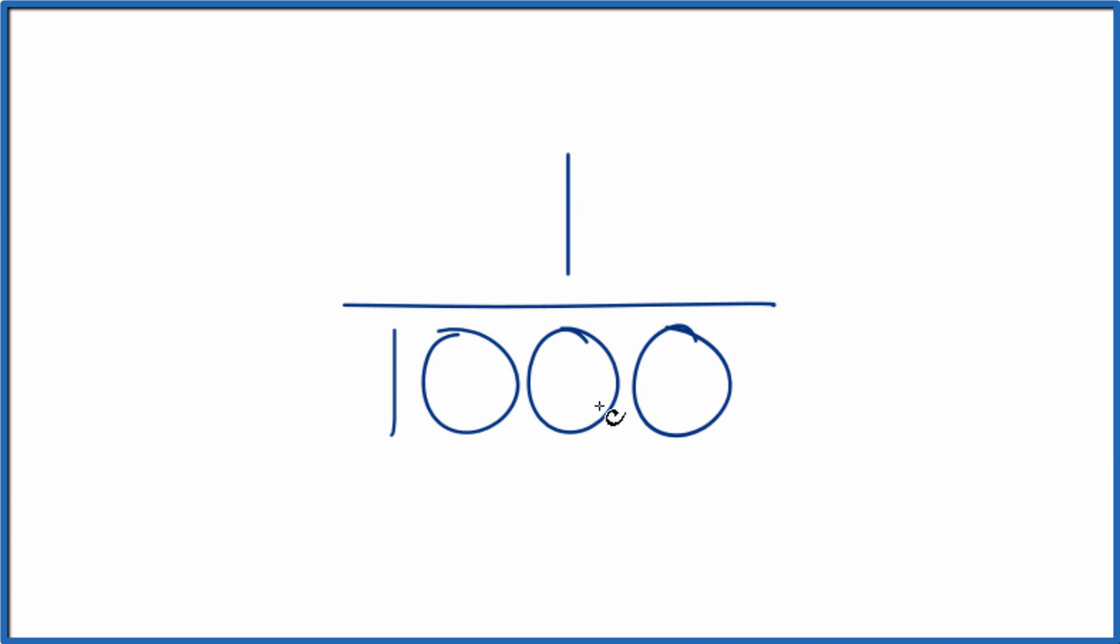The first, it's 1 divided by 1,000. So 1 is much smaller than 1,000. So when we divide 1 by 1,000, we know it's going to be a decimal. That's a good way to start.